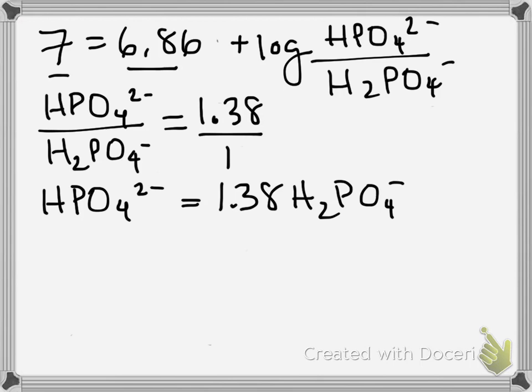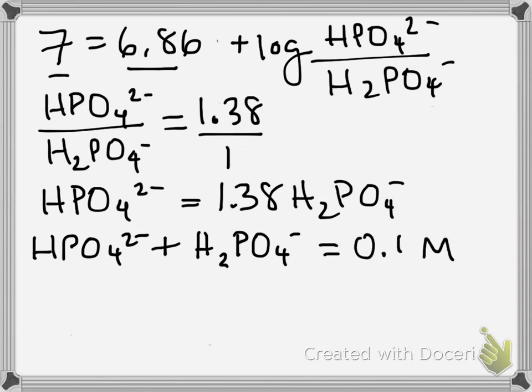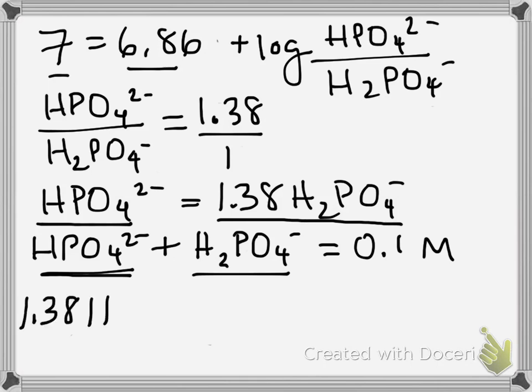This now is showing us an equivalence. We know that both forms, HPO4 and H2PO4, have to equal 0.1 molar. Because the phosphate buffer will be in either this form or this form to equal 0.1 molar in total. So that's a fact, and we can do a substitution now to go down to one variable. So instead of writing HPO4 2-, we know that is the same as writing 1.38 H2PO4. We're doing a substitution. 1.38 times H2PO4 plus H2PO4 equals 0.1 molar.